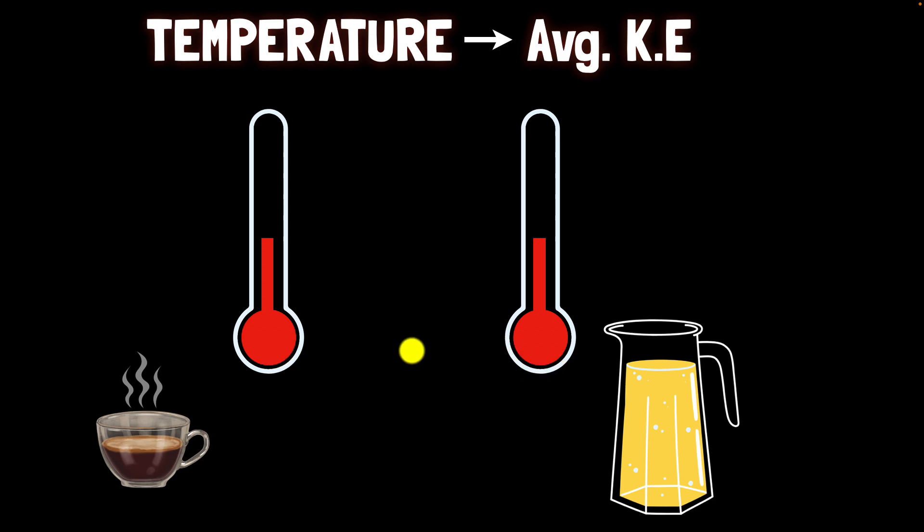Well thermometers work on a fundamental law of nature which is when you have two systems of particles in contact with each other energy will flow from a hotter system to the colder system. And this is pretty intuitive right?